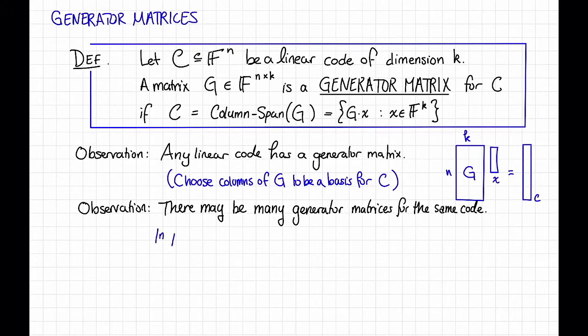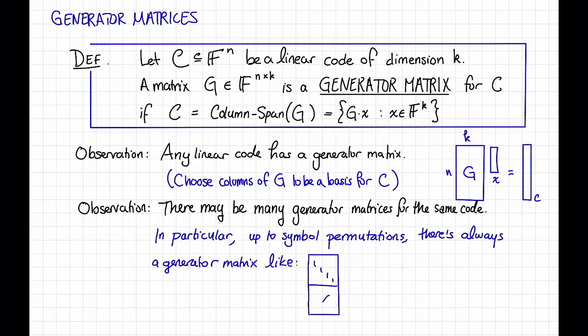In particular, up to permutations of the rows, there's always going to be a generator matrix that looks like this. That is, it has the identity matrix sitting up here, and then some other stuff down here.